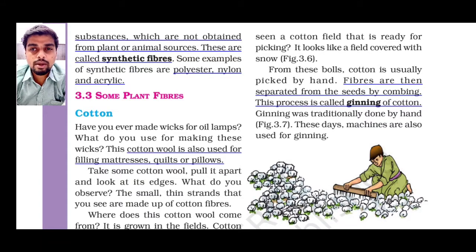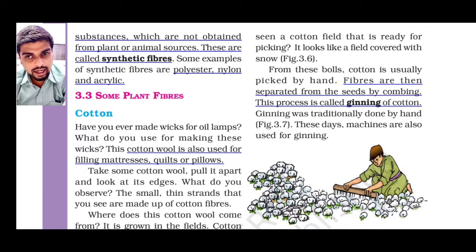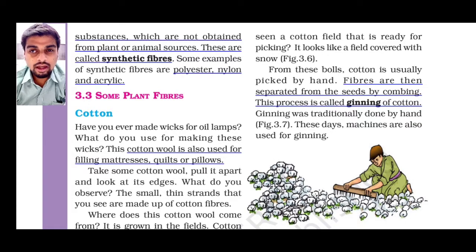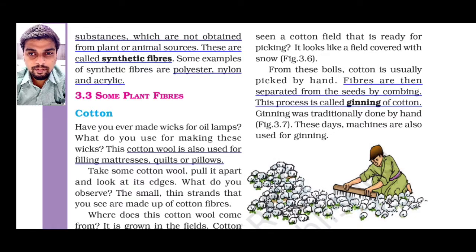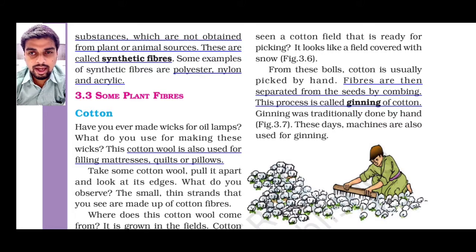The process of separation of fiber from seeds or plant parts is known as ginning. Ginning is the process of separation of fibers from the plant parts — in our case, from the seeds. Ginning is clear; it is the simplest and the first process to make fiber to fabric.